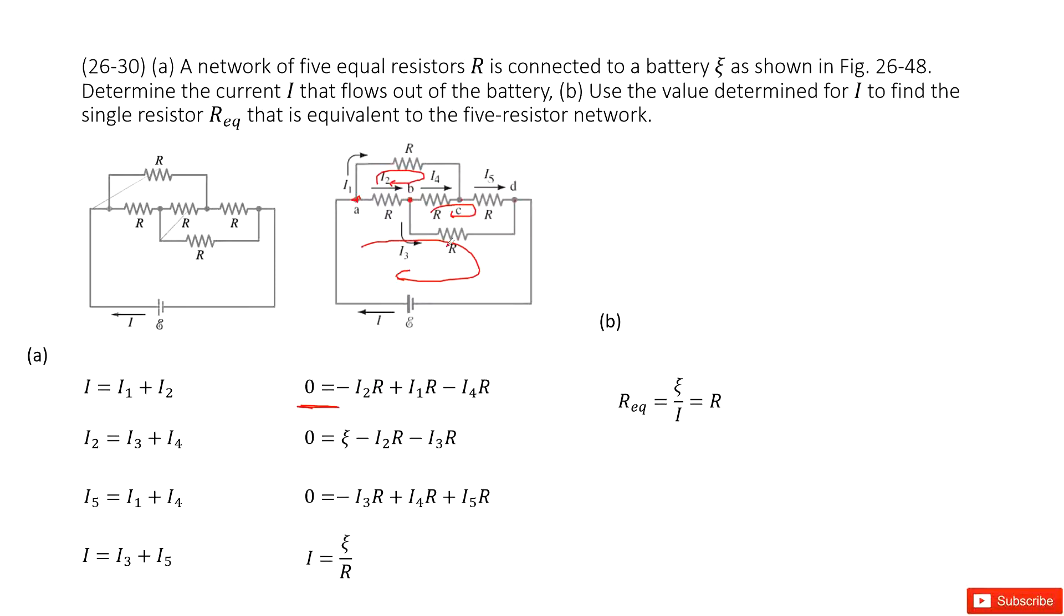And Kirchhoff's second loop will look at there from point A to R to I3 to R and to battery, right? So this equals zero. So first one from the epsilon, this is battery. It goes out and it flows through this I2 with R. So minus I2 with R. And then minus I3 with R, right? Equal to zero.